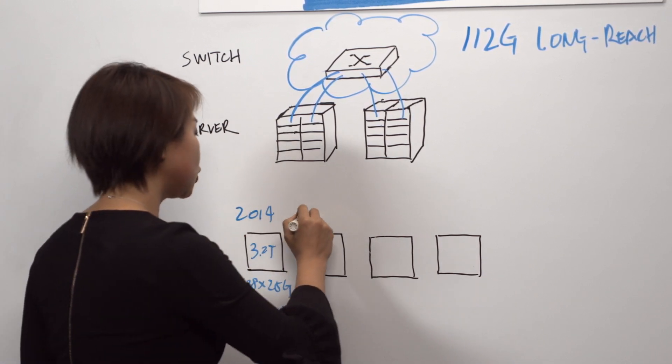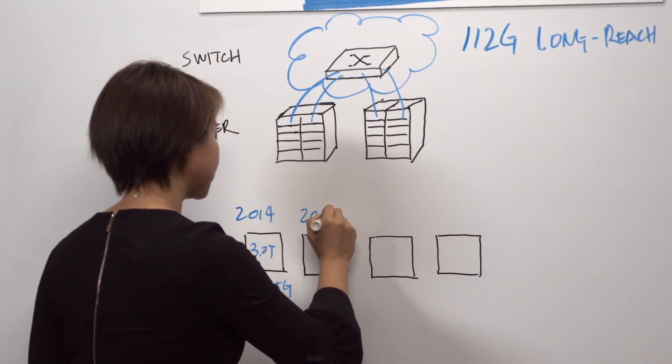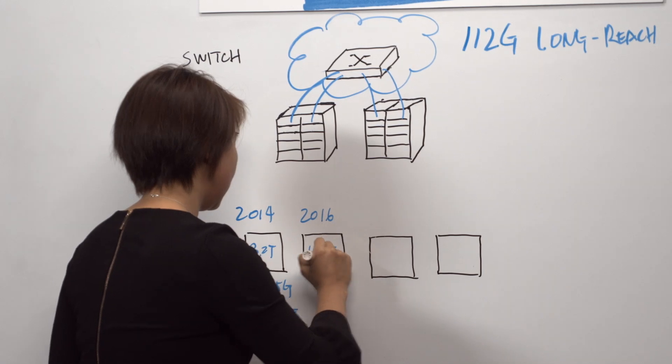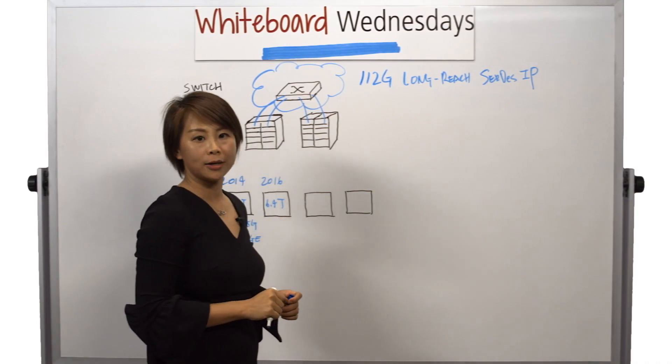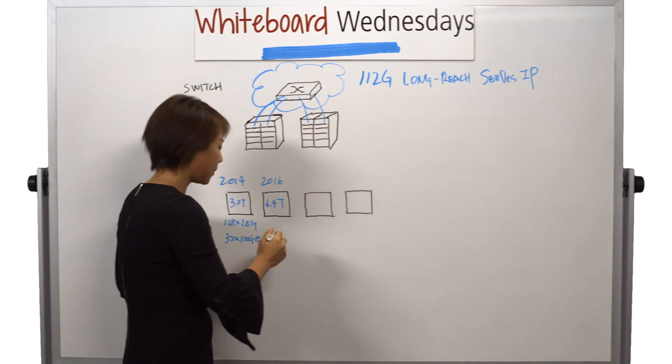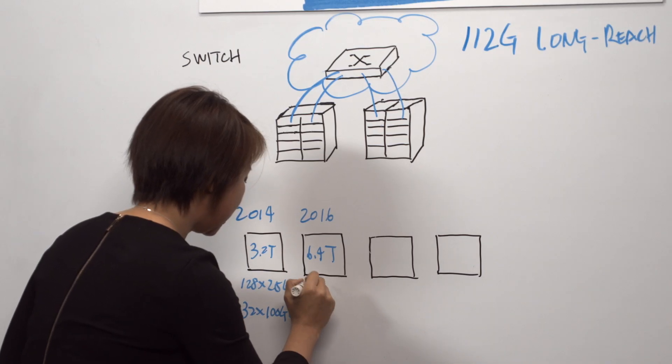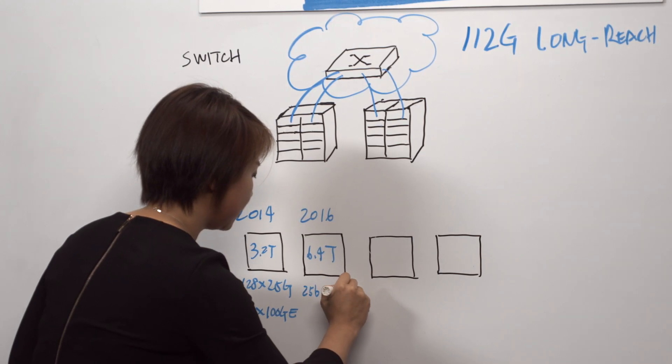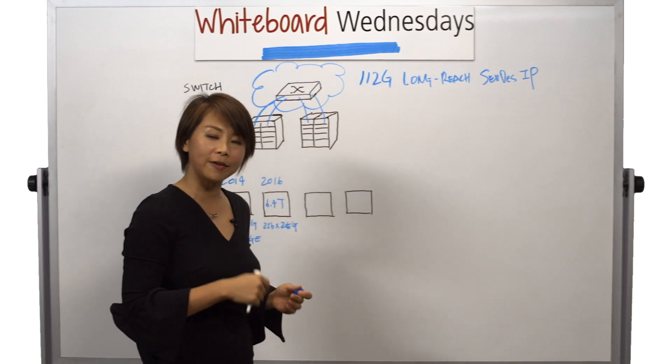And then just two years later, in 2016, the first 6.4 terabit switch was introduced. This time, each chip used 256 25G SerDes.